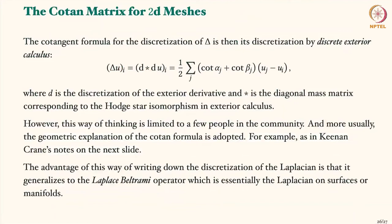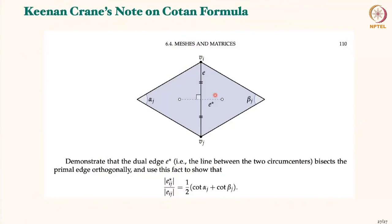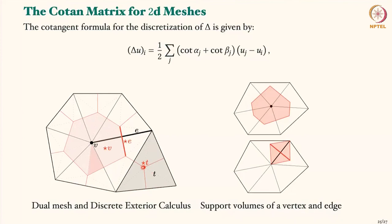The diagonal entries correspond to geometric quantities. For the zero Hodge star — the zero mass matrix — it'll be the Voronoi region area. For the one mass matrix, which corresponds to the cotangent formula weights, it's the dual edge length divided by the primal edge length. And for a triangle there's also a two mass matrix, which is just the area of the triangle. So the entries are geometrically computed rather than through any numerical integration.